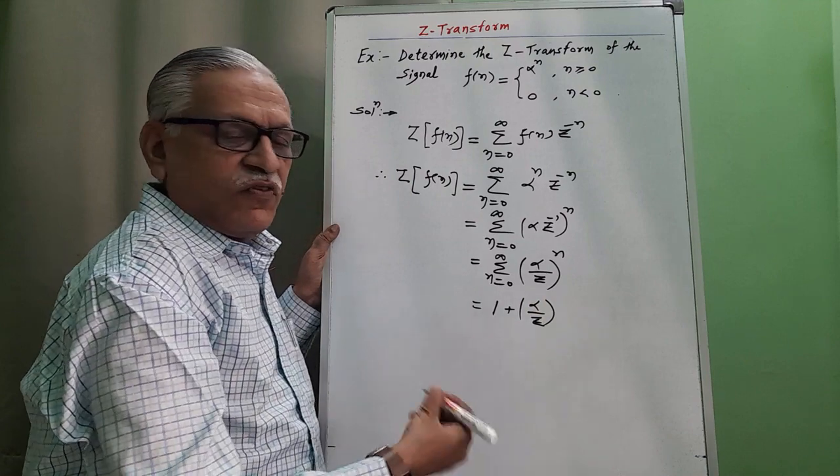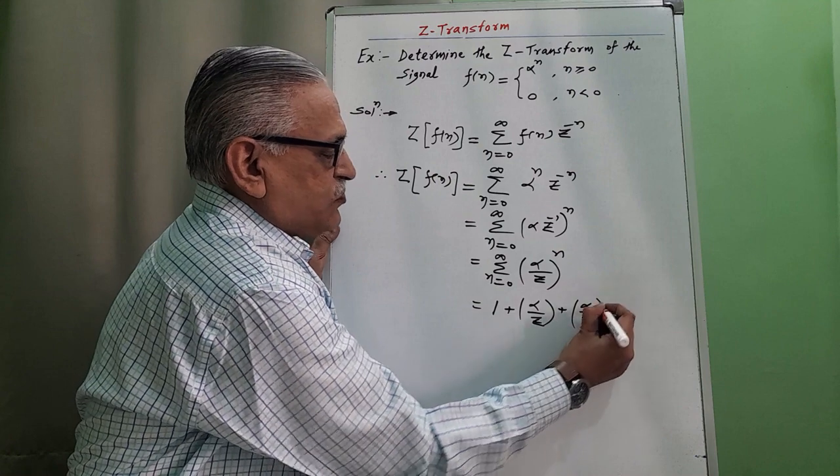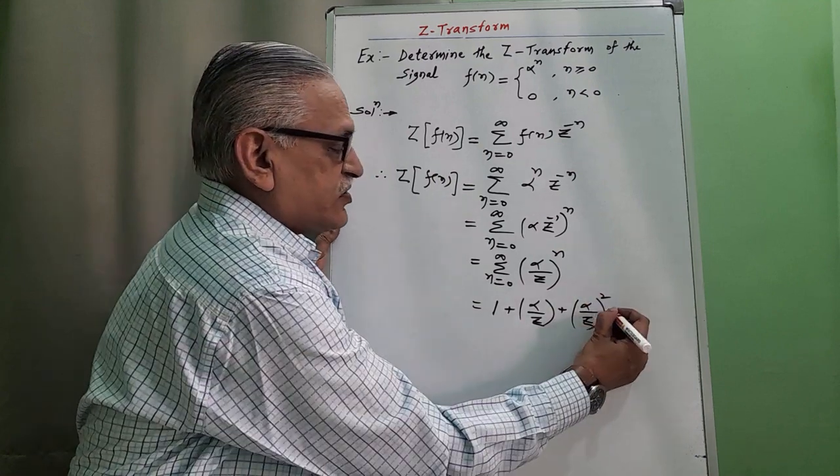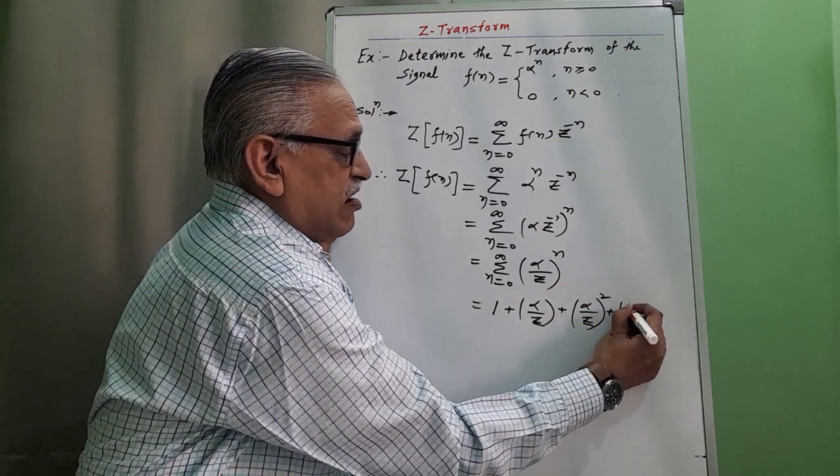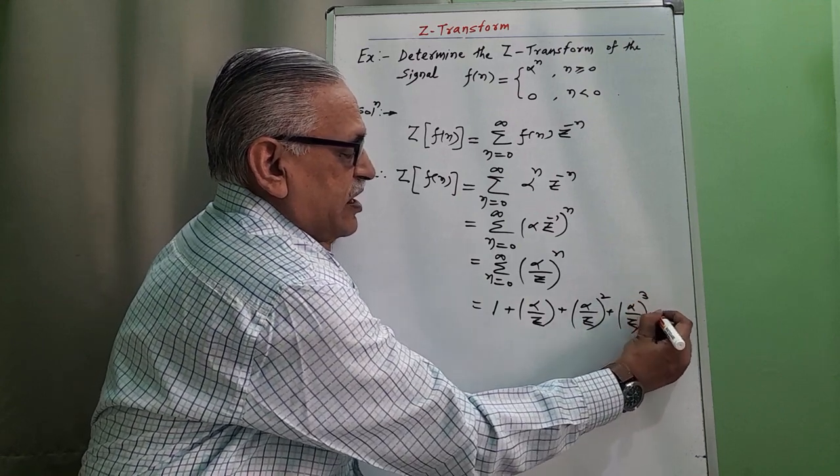For n equals 2, we get alpha by Z whole square. Next, alpha by Z cube, and so on.